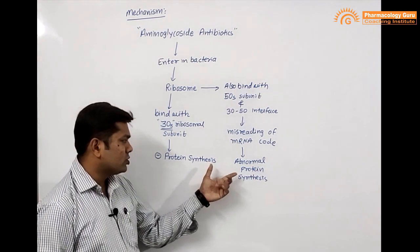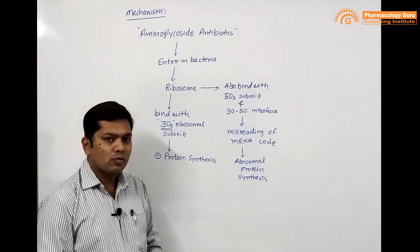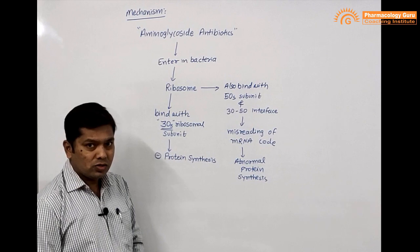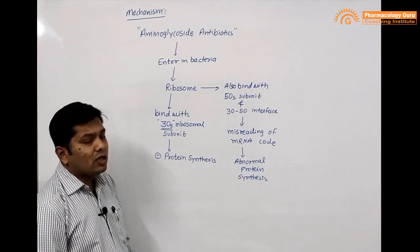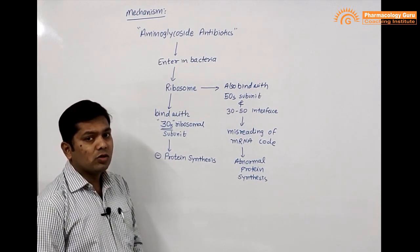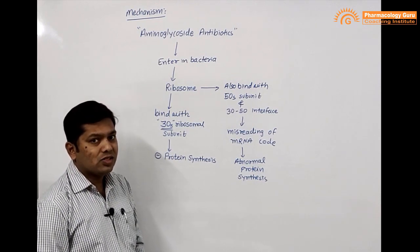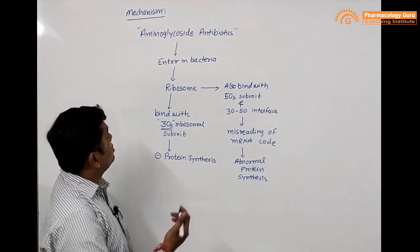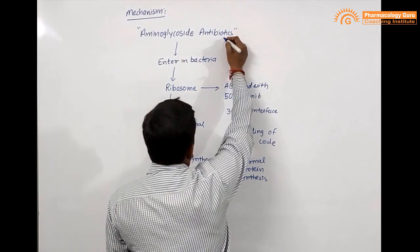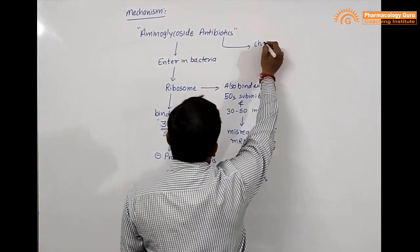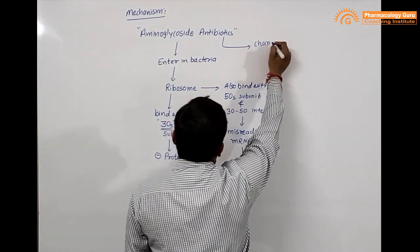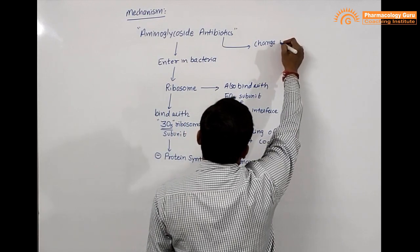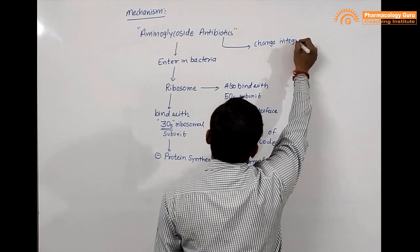This misreading leads to abnormal protein synthesis. These two actions — decreased protein synthesis and production of abnormal proteins — produce a bacteriostatic effect. However, aminoglycoside antibiotics also have a bactericidal effect, which occurs in a dose-dependent manner.